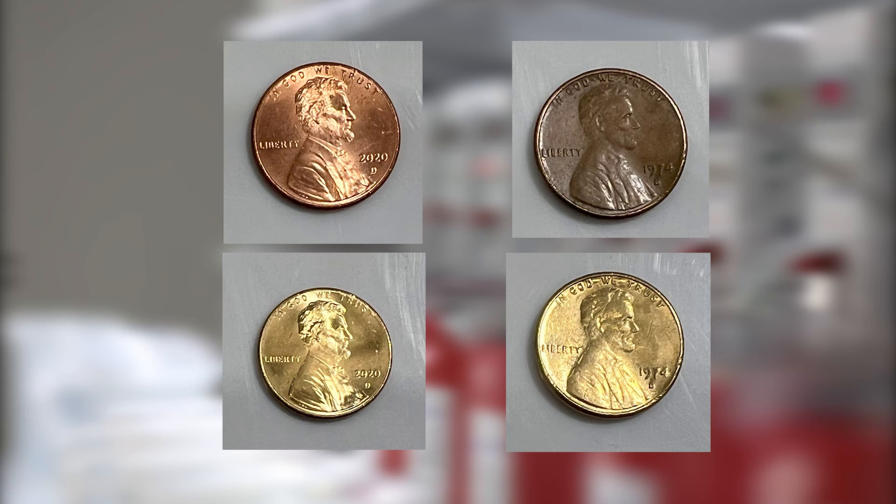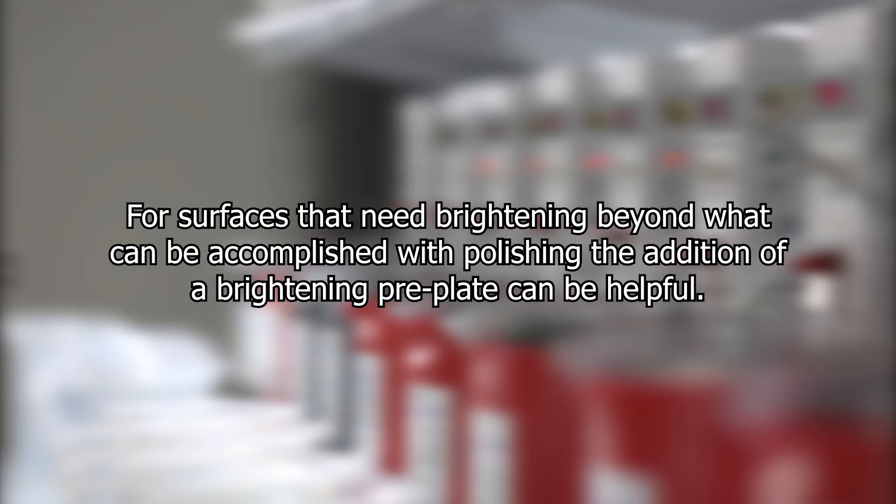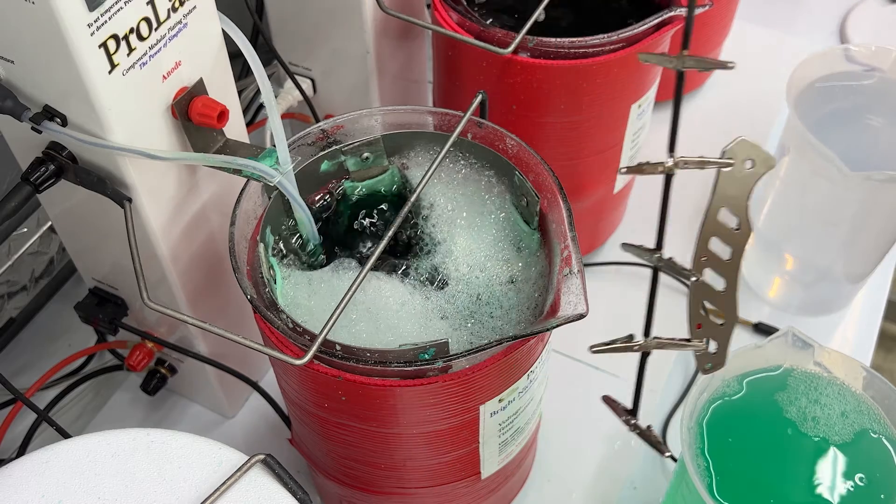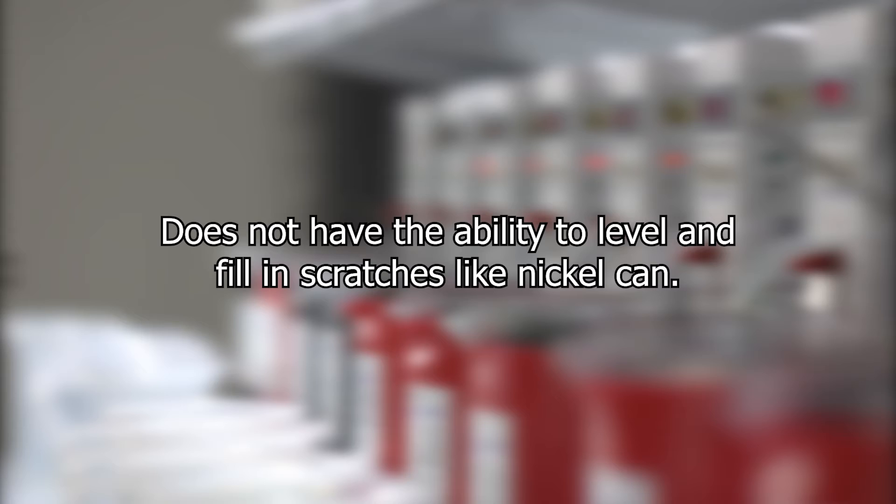For example, if you gold plate two different coins, one that is shiny and one that is dull, after the gold plating you will have two different outcomes that reflect the original finish. For surfaces that need brightening beyond what can be accomplished with polishing, the addition of a brightening pre-plate can be helpful. Bright nickel is an easy way to brighten up the surface and have an even finish all over. Palladium is a durable and nickel-free option. It is brighter than nickel but it also is more expensive and it doesn't have the ability to level and fill in scratches like nickel can.